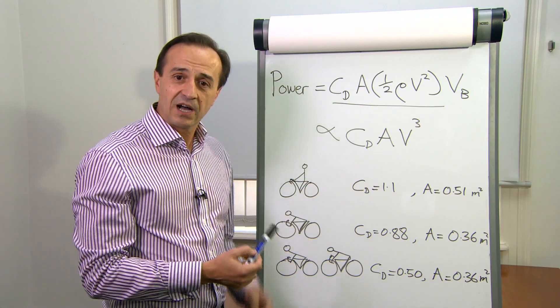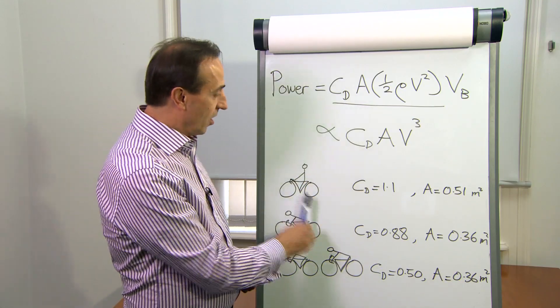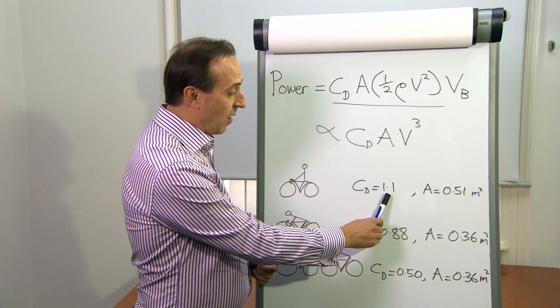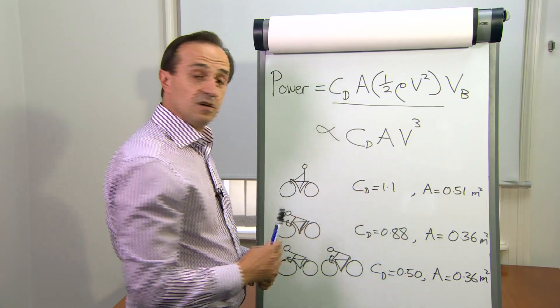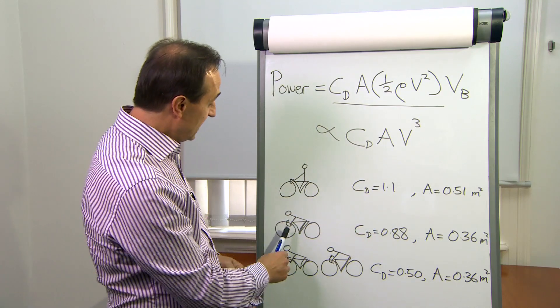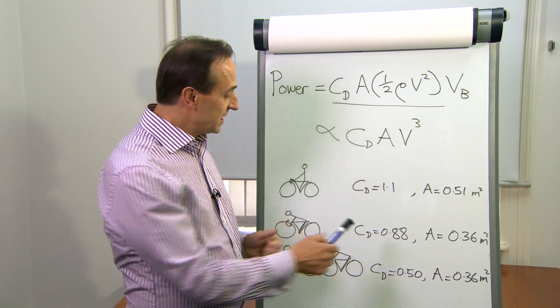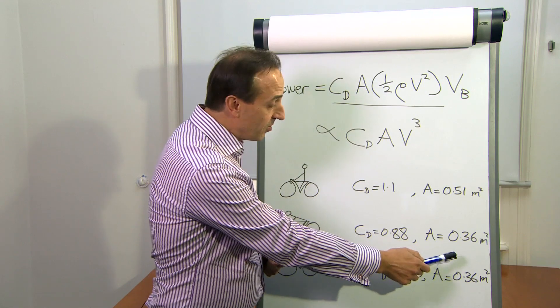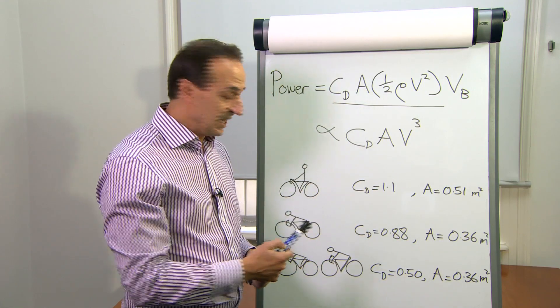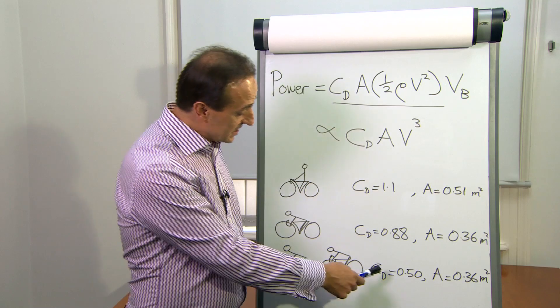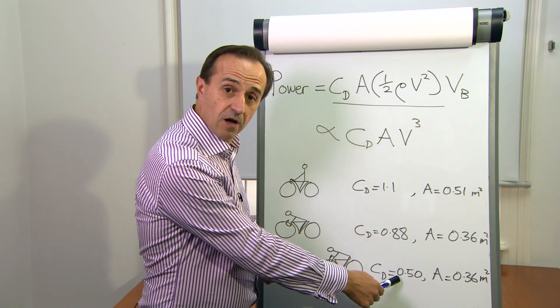Here we have three scenarios. An upright rider would have a CD of about 1.1 and an area of 0.51 m² as a typical value. If that rider tucks down into an aerodynamic position, CD will drop, and also the area will drop by about 30%. If that same rider drafts, then CD drops further to 0.50.